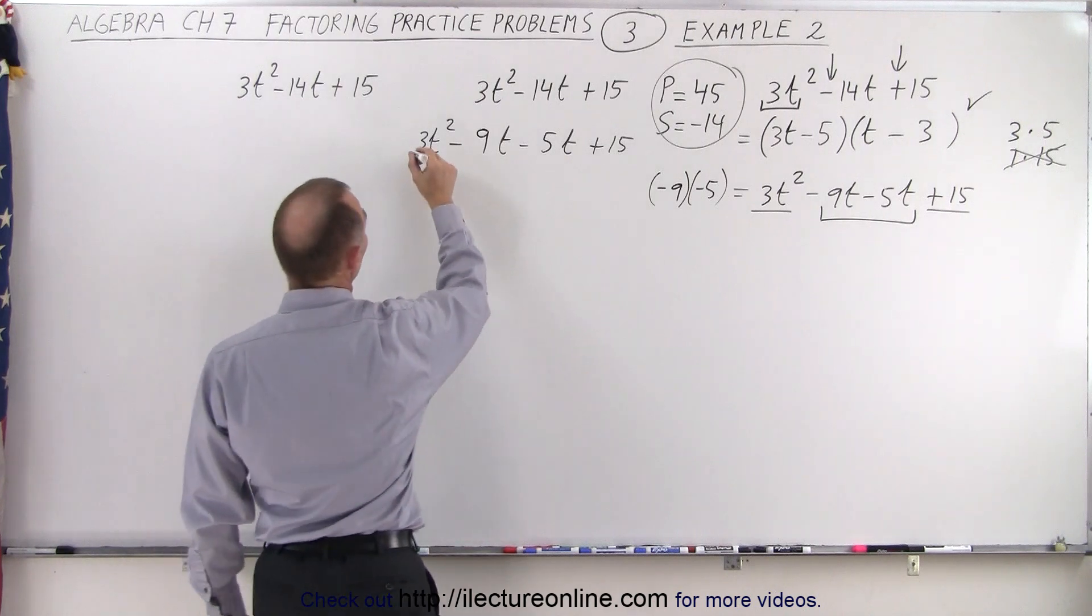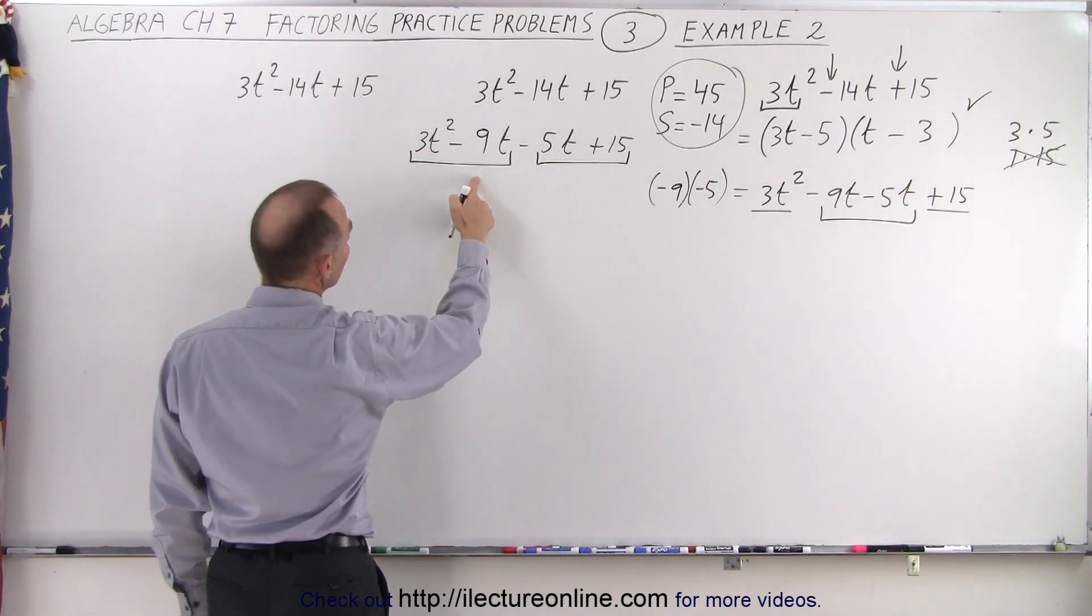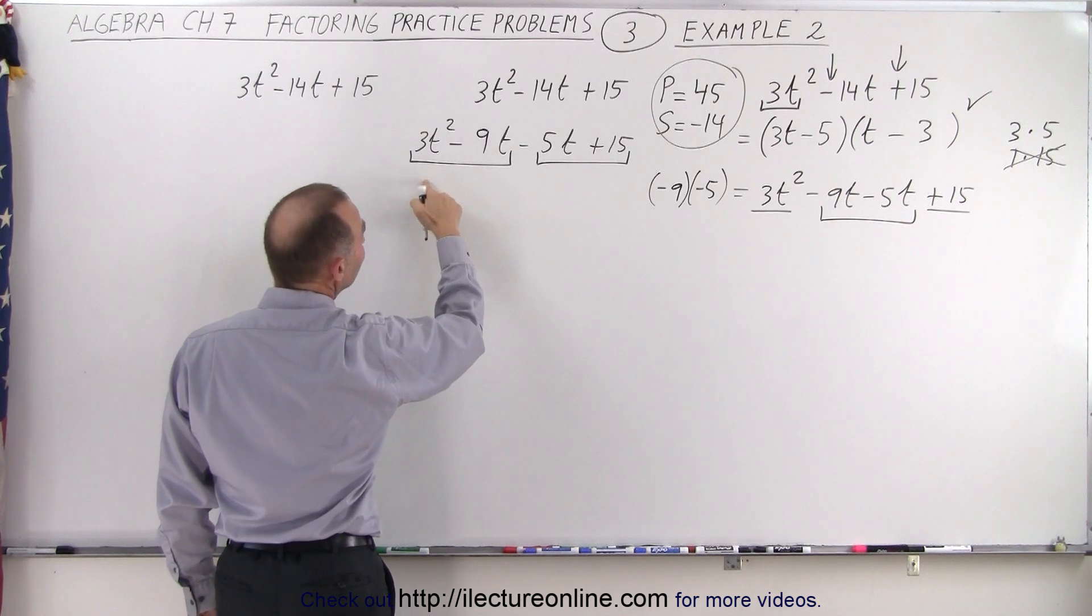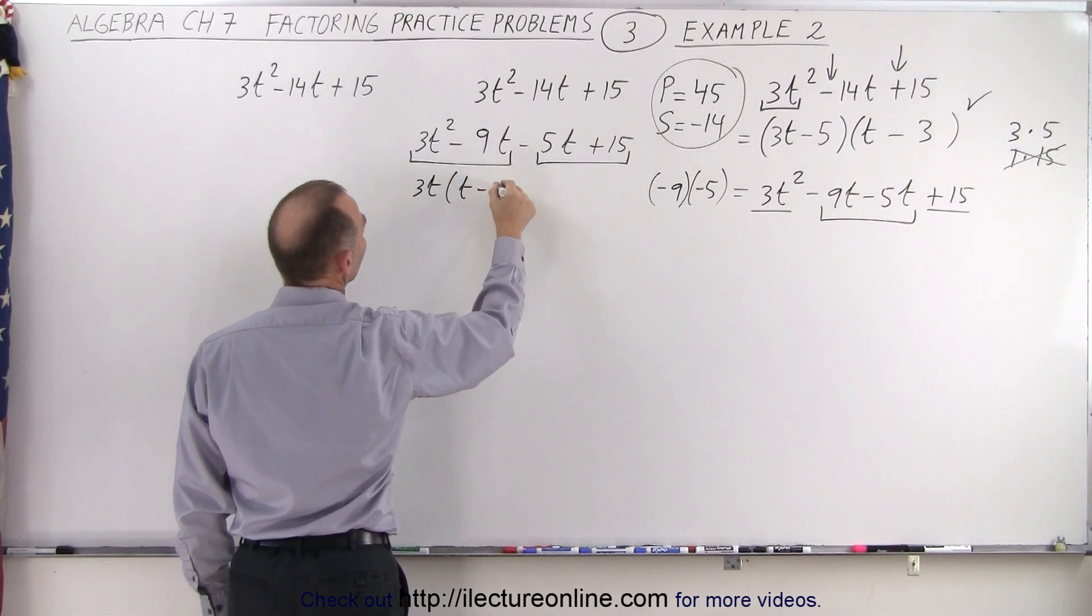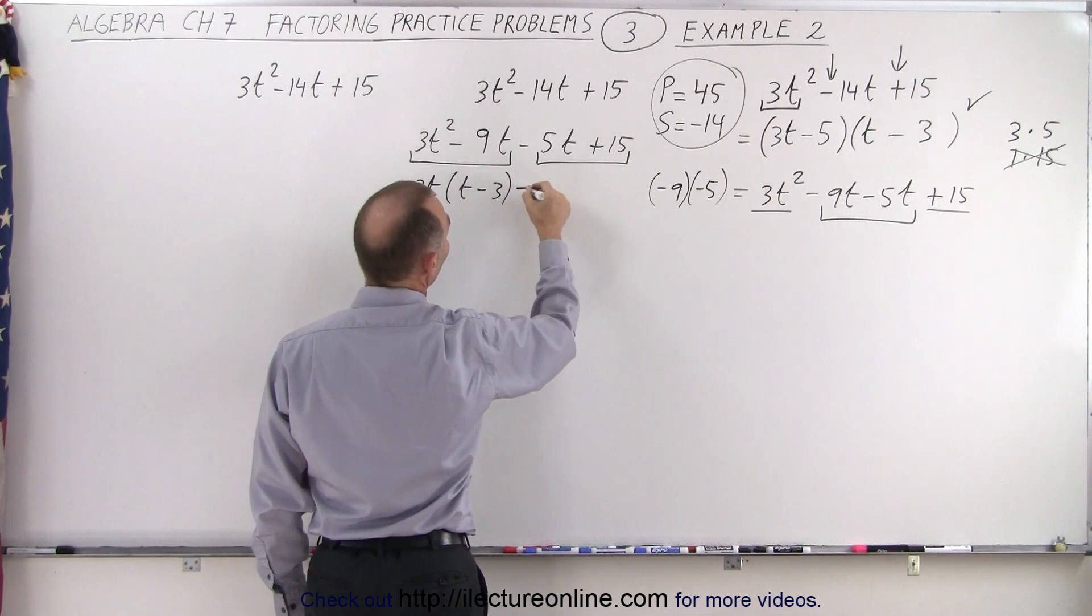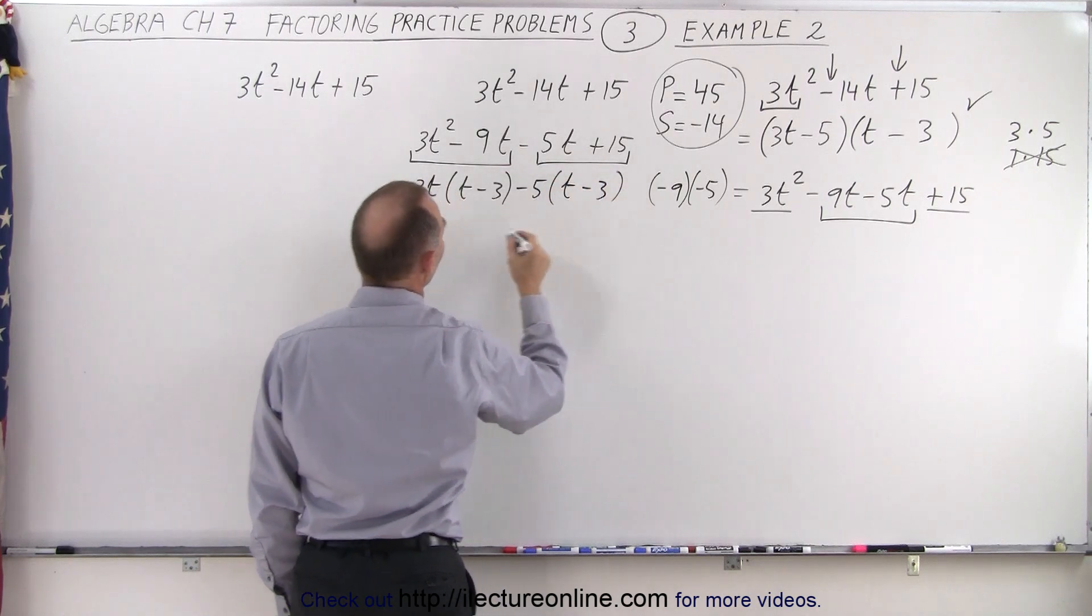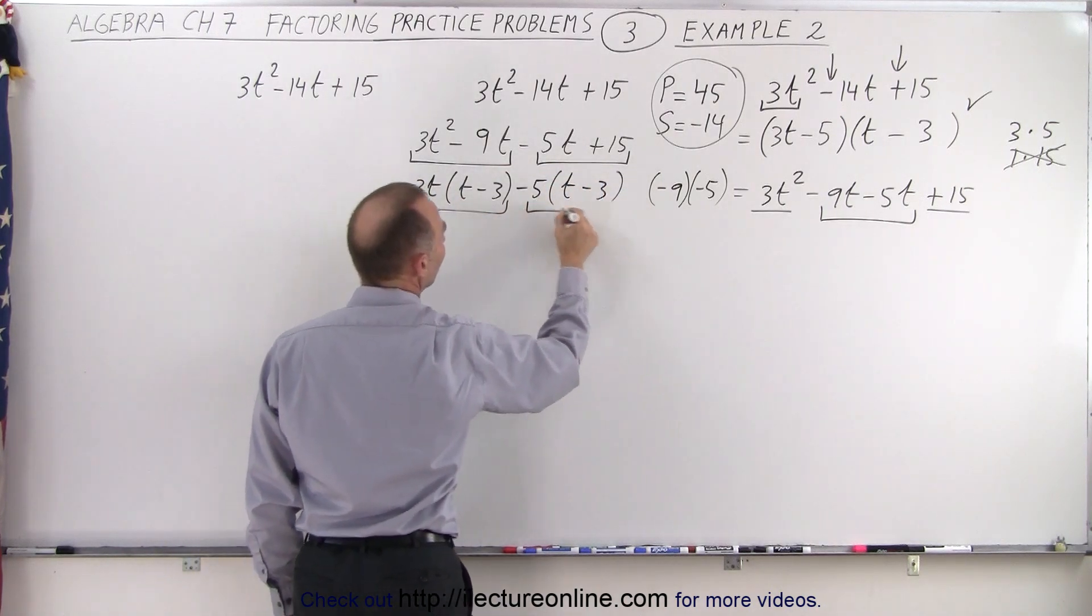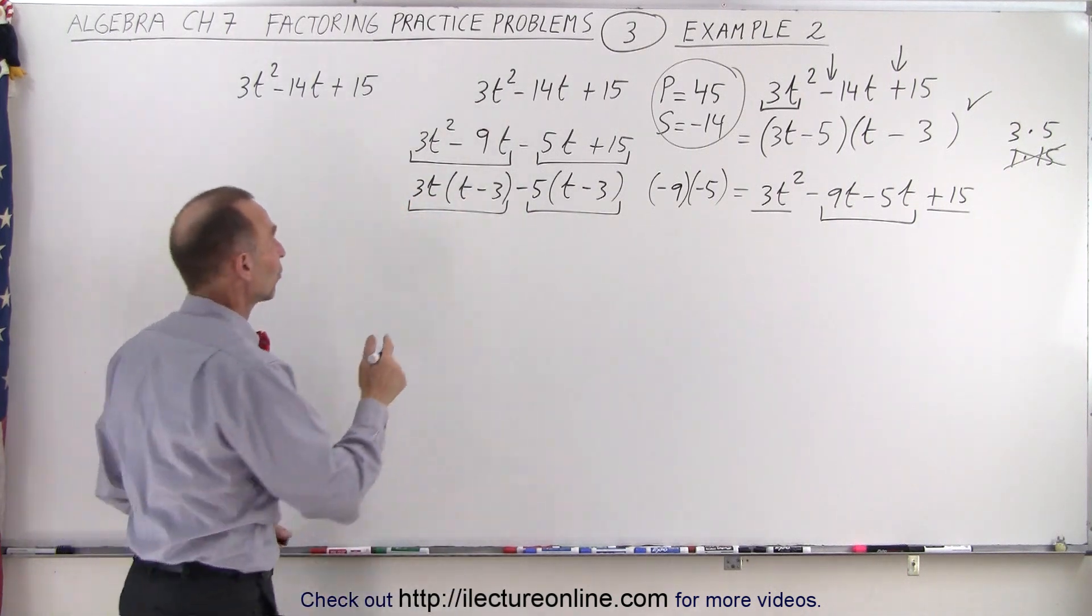Once we've done that we're now going to go ahead and group them in groups of 2. Here we can factor out a 3t. So when we factor out a 3t we're left with a t minus 3. And here we can factor out a minus 5 and when we do that we get a t minus 3. And then notice in the two terms we have here they both contain a t minus 3 which can then be factored out as well.